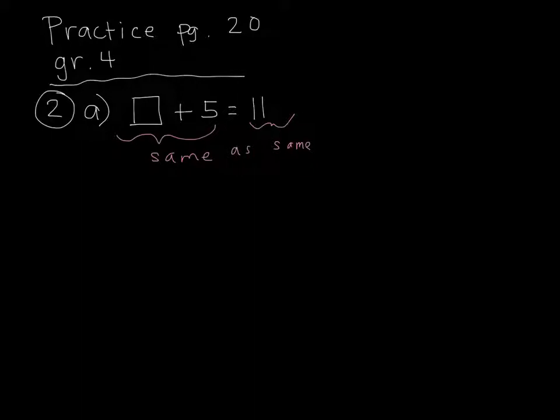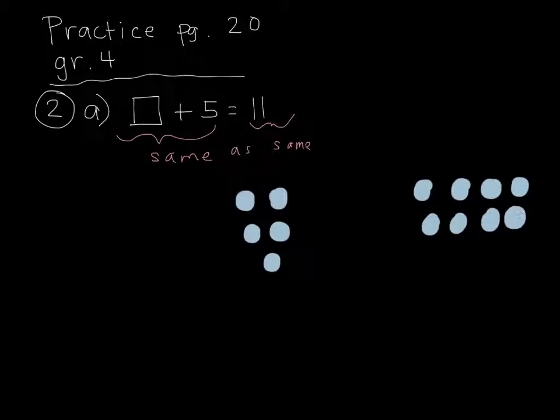Here we have 5 on this side, and on the other side we have 11. So now we've represented the equation with counters, or some kind of picture.